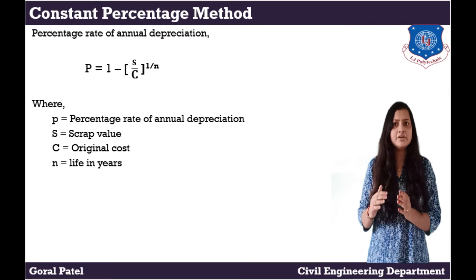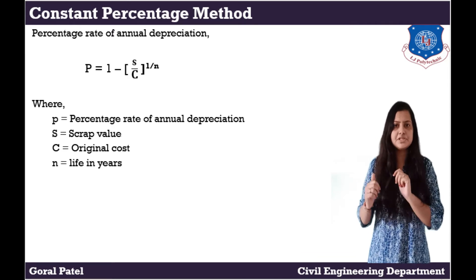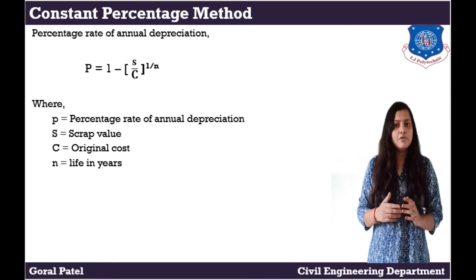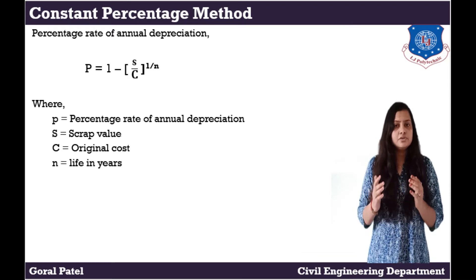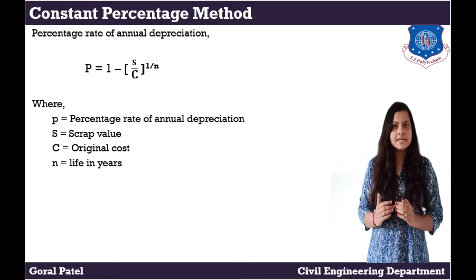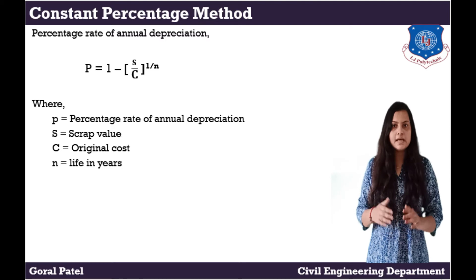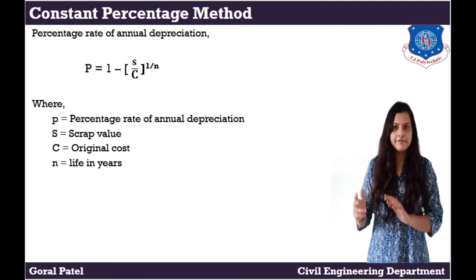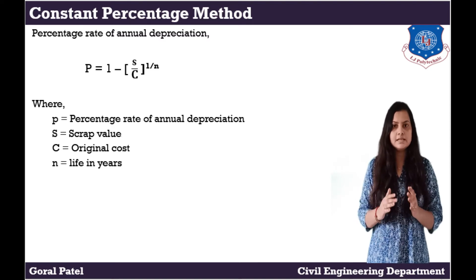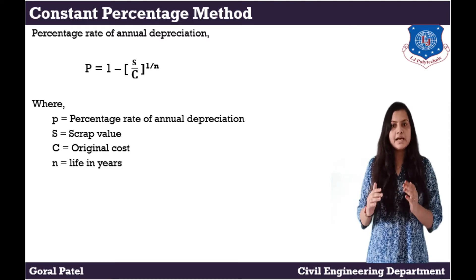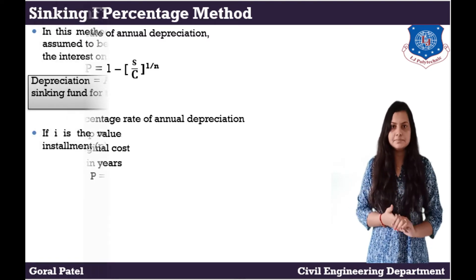The percentage rate of annual depreciation is calculated using the formula: P = (S / C)^(1/N). Where P is the percentage rate of annual depreciation, S is the scrap value, C is the original cost, and N is the life in years.